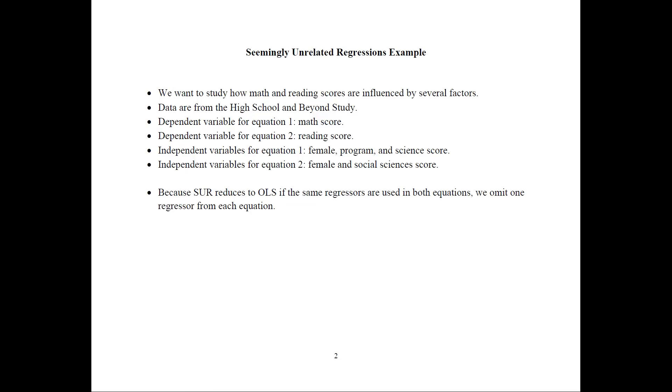The independent variables for equation two would be female and social sciences score. So I purposefully tried to include different types of independent variables, because if you have them the same, then you would have the same results as the OLS model.